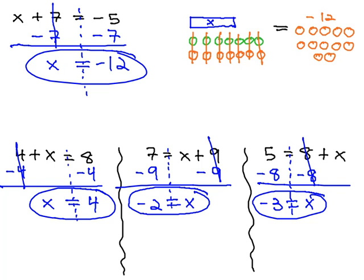We could verify these three answers by plugging the number we got in for x in the equation. 4 plus x, or 4 plus 4 equals 8, like we want. x, or negative 2 plus 9, is 7, like we want. 8 plus x, or 8 plus negative 3, is 5, like we want.